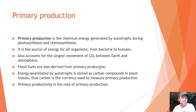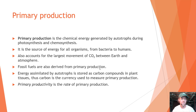Primary production is the chemical energy generated by autotrophs during photosynthesis and chemosynthesis. Chemosynthesis refers to microorganisms — particularly those living in deep-sea or hydrothermal vents — that turn chemicals into tissue without using the sun's energy. Primary production is the source of energy for all organisms from bacteria to humans, accounts for the largest movement of carbon dioxide between the earth and the atmosphere, and fossil fuels are also derived from ancient primary production.